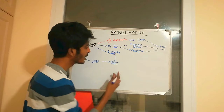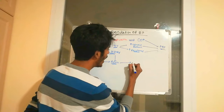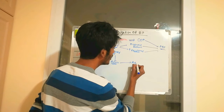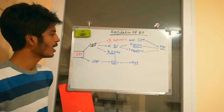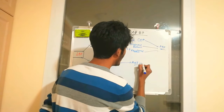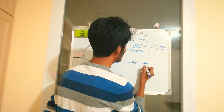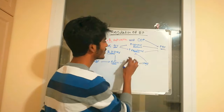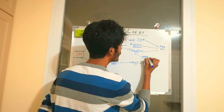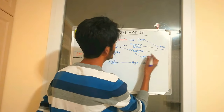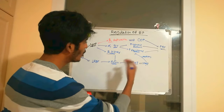This renin leads to the formation of angiotensin 1, which is further converted into angiotensin 2. Angiotensin 2 causes vasoconstriction, increasing vascular resistance, which leads to increased blood pressure.